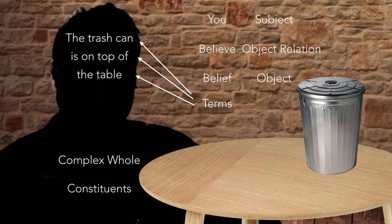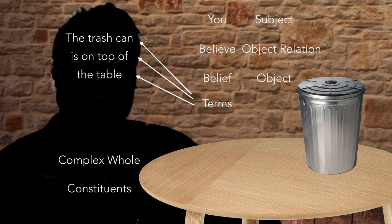Now the trash can on top of the table — not the belief, but the fact of the trash can on top of the table — this is also a complex whole. The trash can is a part of it, the table is a constituent of it, and the relation 'on top of' is another constituent. So I've got one complex whole, that's me believing the belief, and another complex whole, that's the fact that the trash can is on top of the table.